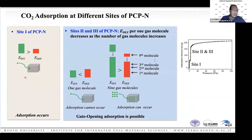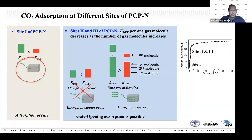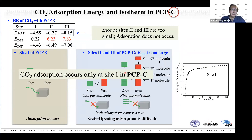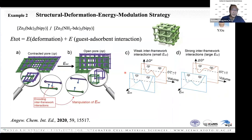The scenario is: in the N form, site one is filled with six molecules first. Then for the next step, the first CO2 molecule has deformation energy larger than interaction energy — so it does not happen. But when nine molecules are accommodated simultaneously, total deformation energy becomes smaller than interaction energy, so adsorption occurs abruptly. In the C form, site one adsorption is easy, but for sites two and three, in every case deformation energy is larger than interaction energy, so adsorption does not occur. Despite nearly identical structures, the CO2 sorption behavior is completely different.